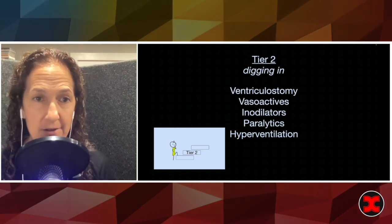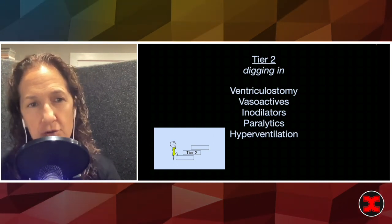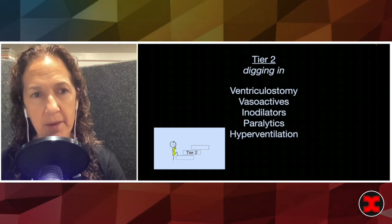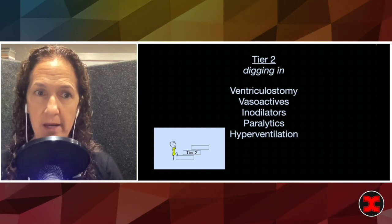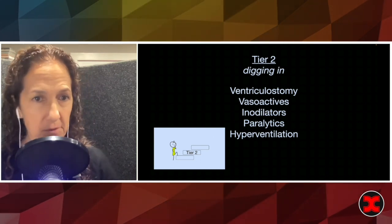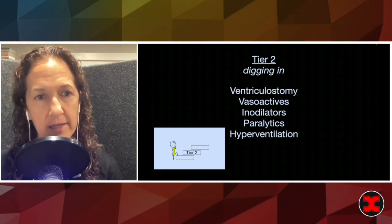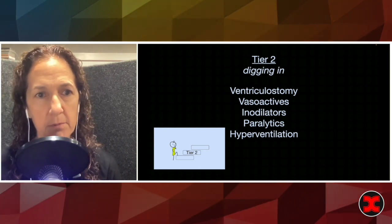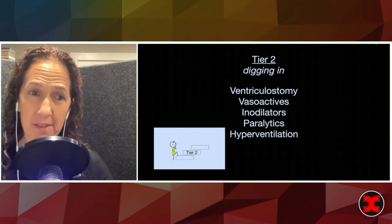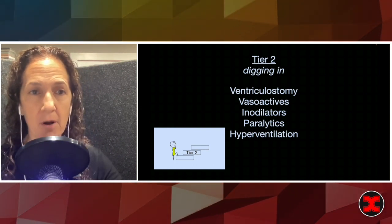Inodilators are useful in subarachnoid hemorrhage patients where we're trying to keep the blood pressure up to prevent vasospasm but we're also trying to decrease the risk of ICP. So an inodilator like milrinone will vasodilate to allow the perfusion, the cerebral perfusion pressure to keep those vessels open and help to prevent them from vasospasming, but also decrease the ICP.